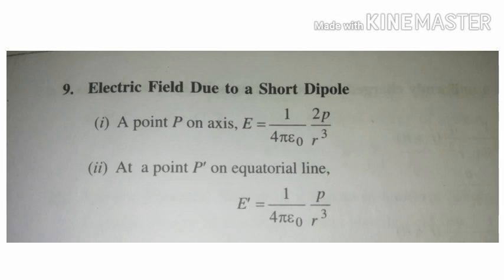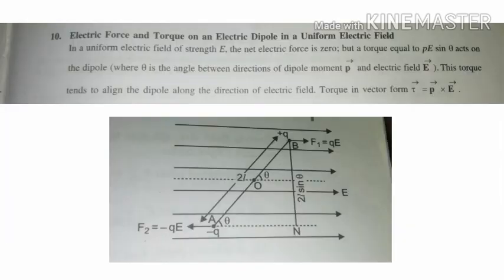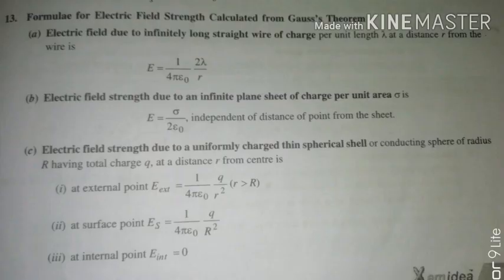The derivation: we will derive the axial field equal to 1 by 4πε₀ times 2p divided by r³. For equatorial line, the intensity of electric field is 1 by 4πε₀ times p divided by r³. The torque is equal to τ = p × E.